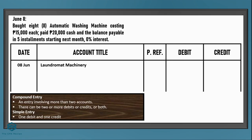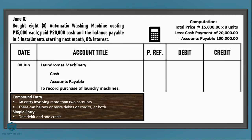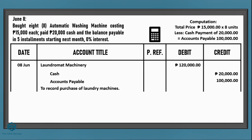For the cash payment, we credit cash. For the installment balance, we use accounts payable. The other details given — like useful life and salvage value — we don't need for this entry, so ignore them. Don't forget the explanation. Each machine costs 15,000 times 8 units, so the total cost is 120,000 pesos — put that under the debit column. The down payment of 20,000 goes to the credit for cash. Subtract the down payment to get the balance of 100,000 for accounts payable.